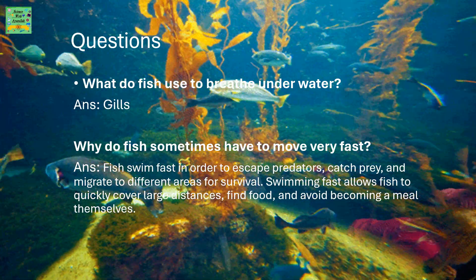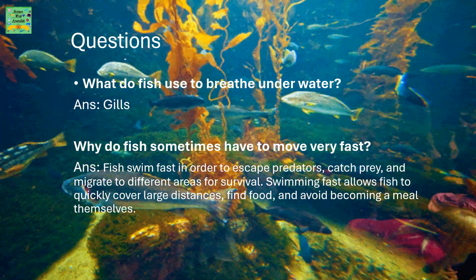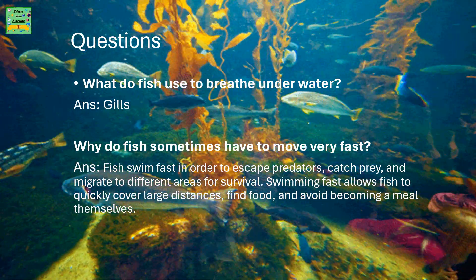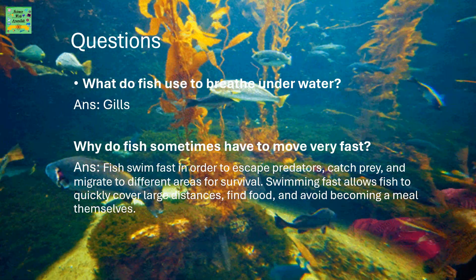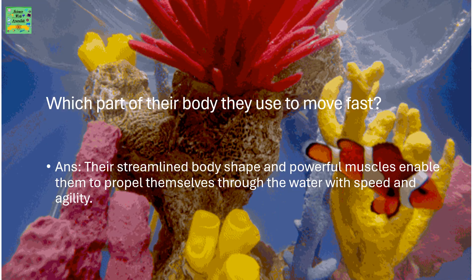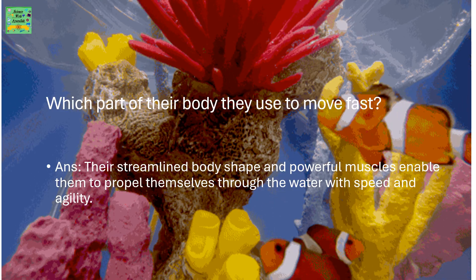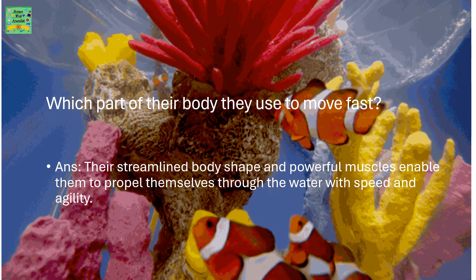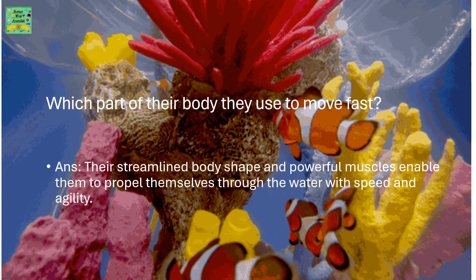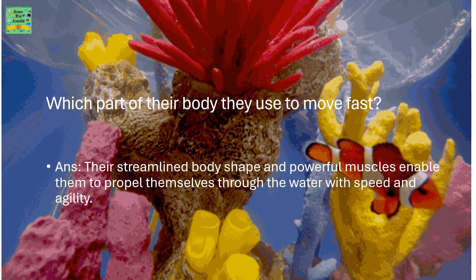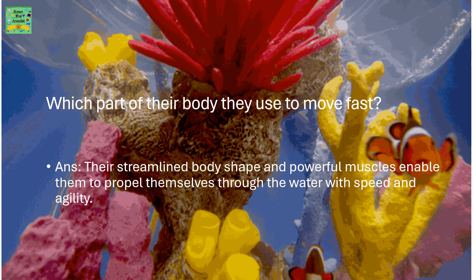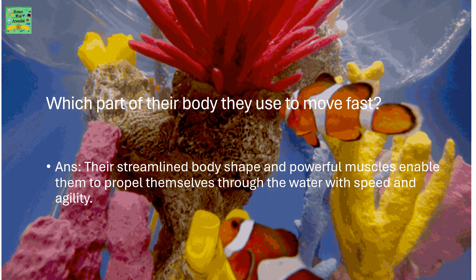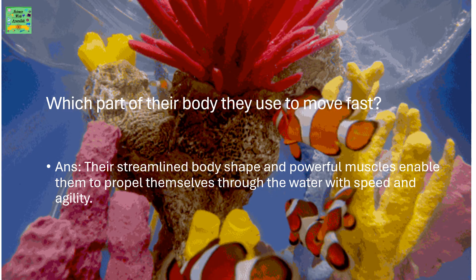Swimming fast allows fish to quickly cover large distances, find food, and avoid becoming a meal themselves. Which part of their body do they use to move fast? Their streamlined body shape and powerful muscles enable them to propel themselves through the water with speed and agility.